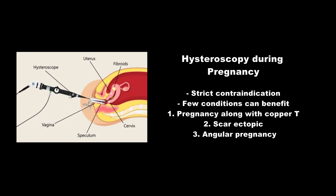Regarding hysteroscopy during pregnancy: pregnancy is generally a strict contraindication for hysteroscopy. However, some specific conditions are known to benefit from it. The first is pregnancy with a copper-T IUD, where the device is removed hysteroscopically and the pregnancy is continued — several reports show uneventful outcomes. The second is scar ectopic pregnancy, where hysteroscopic removal is one management option. The third is angular pregnancy, as in our case, where we successfully avoided unnecessary excision or termination.